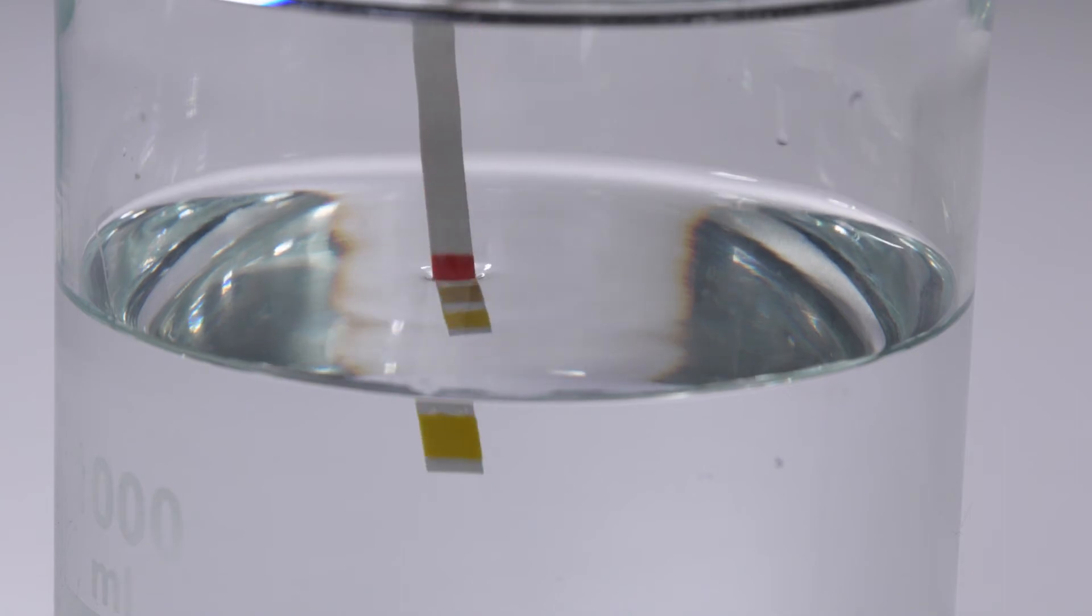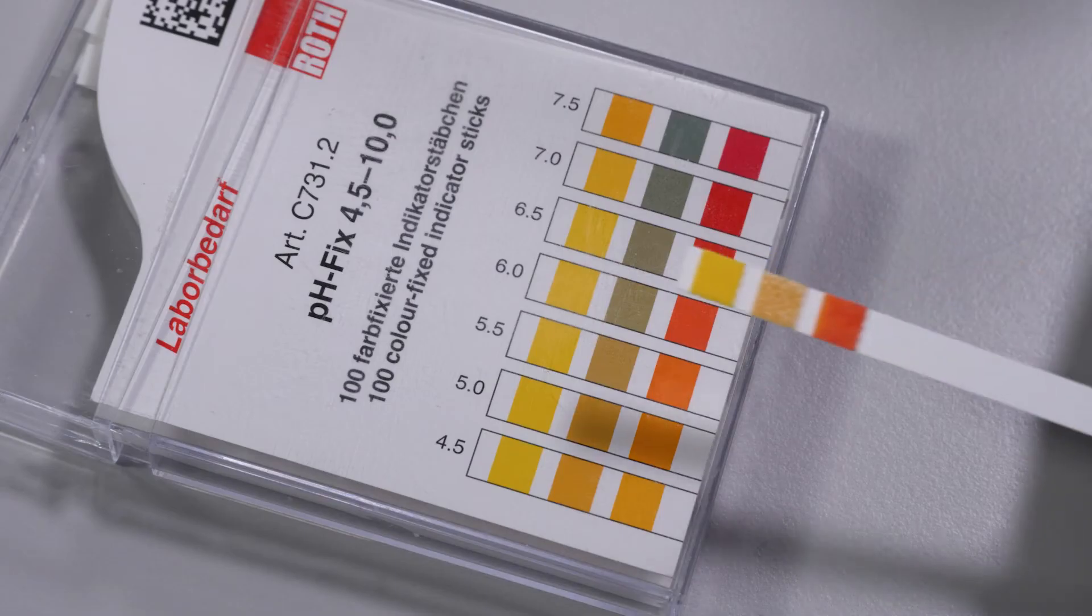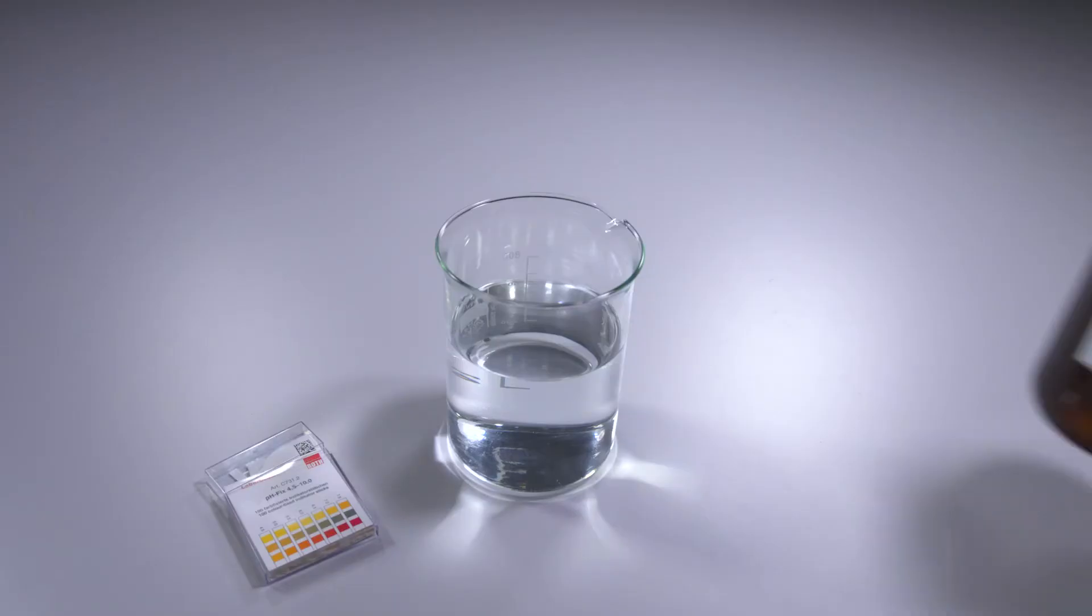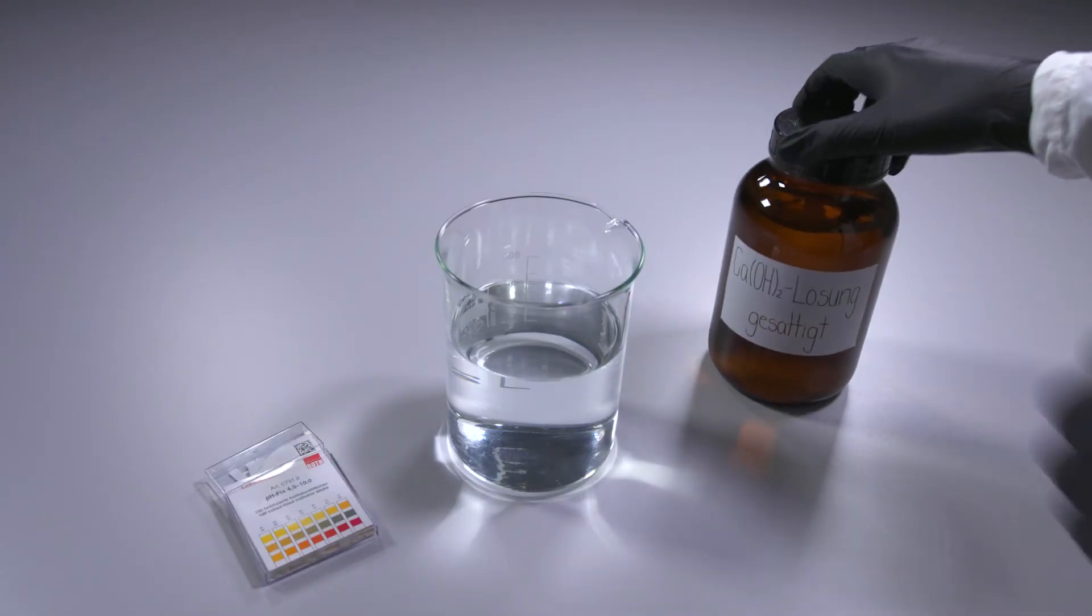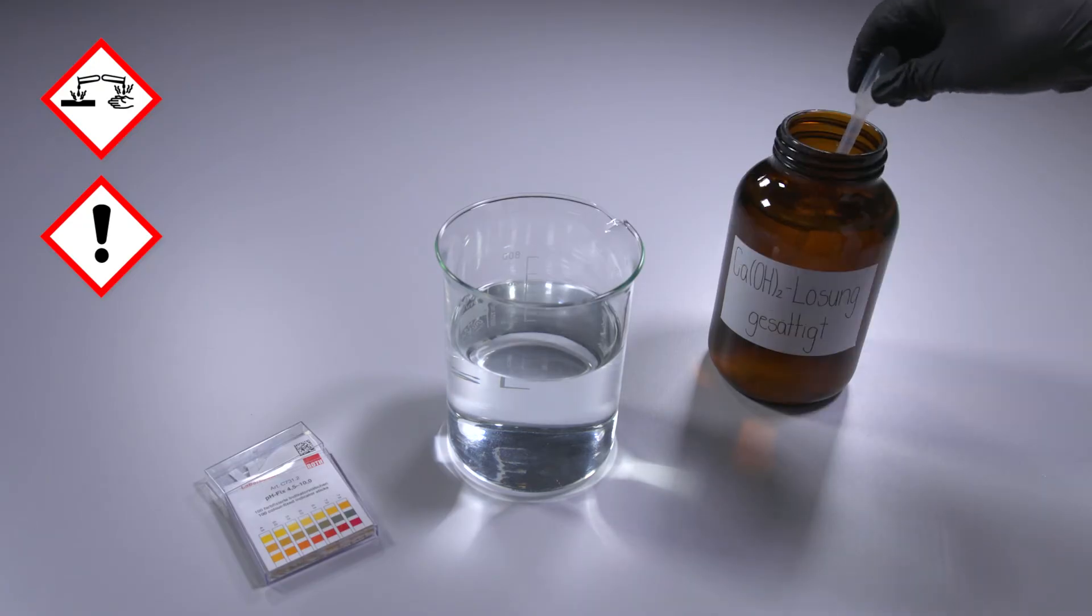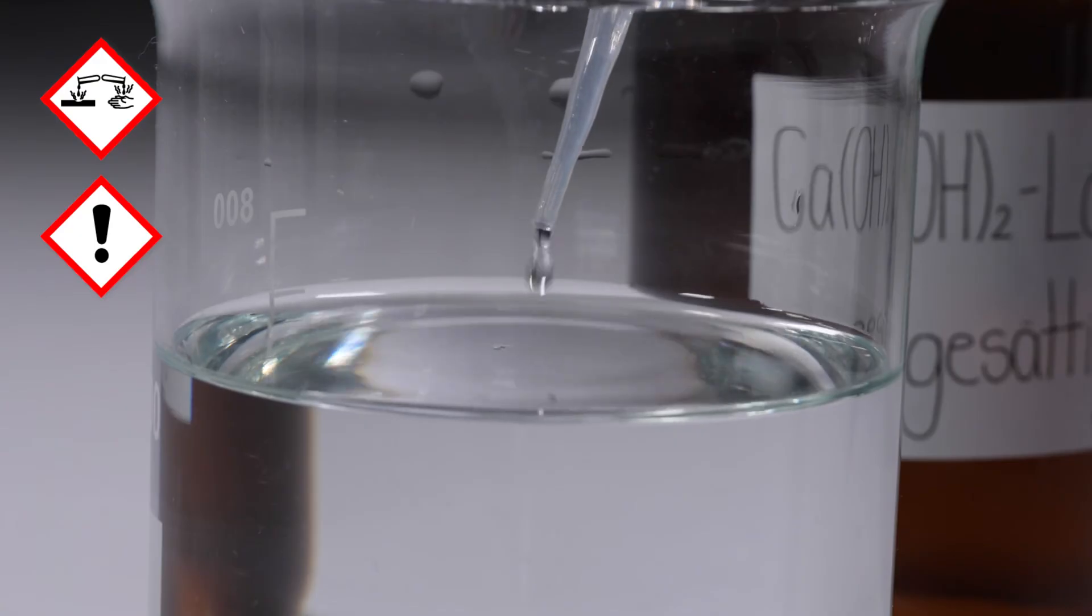Demineralized water generally has a pH value of between 5.5 and 6. The pH value can be adjusted within the alkaline range using a saturated calcium hydroxide solution, for example.